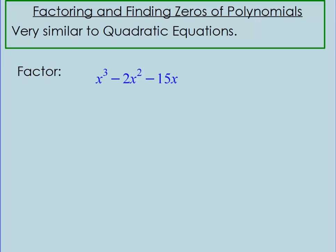So factoring — there's a lot going on in this section, and it's really deep. I'm going to try to go over what I think are the highlights. There's more to it in the book. First of all, we factor polynomials sometimes because we want to find the zeros, and this is very similar to factoring quadratic equations.